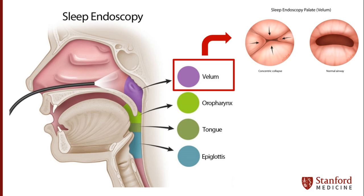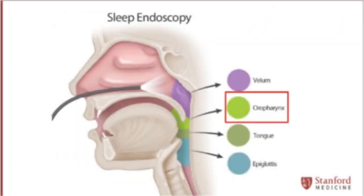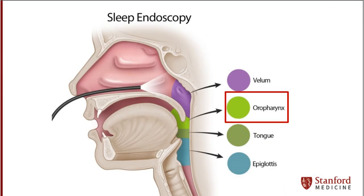From here, the scope is positioned in a rostral view facing towards the larynx, also known as the voice box, to best visualize the velum as sedation is infused. After observation of the velum is complete and the degree of obstruction is noted, the scope is then passed distally to observe the airway at the level of the oropharynx.